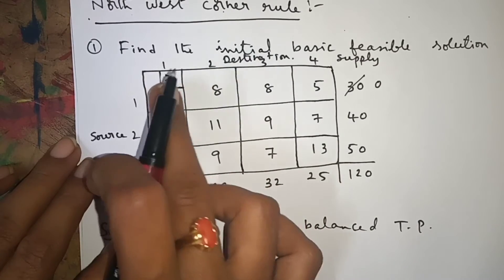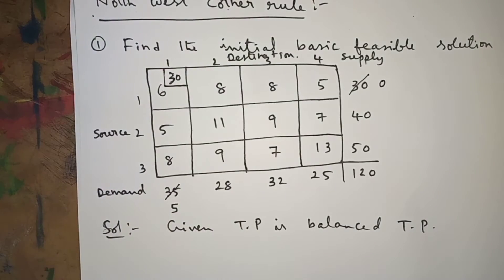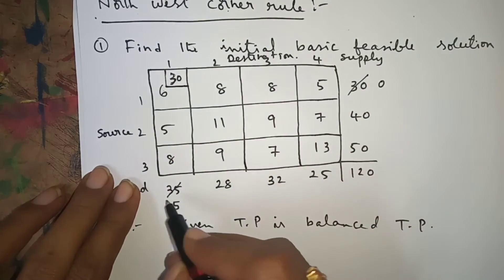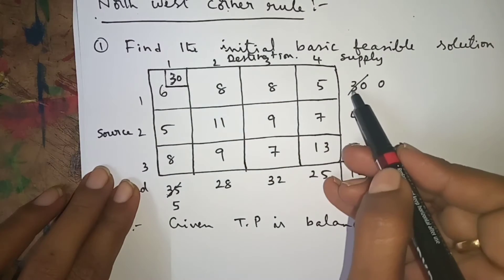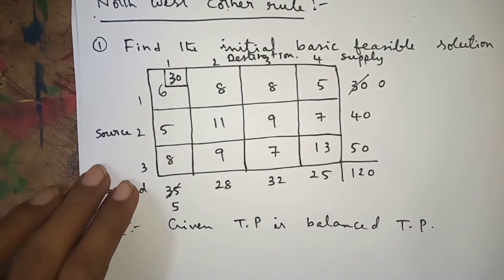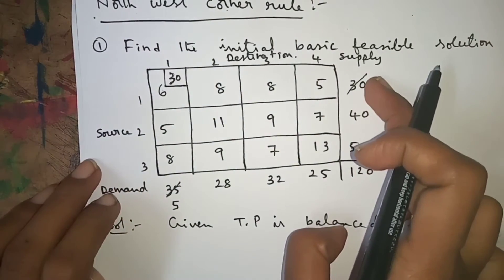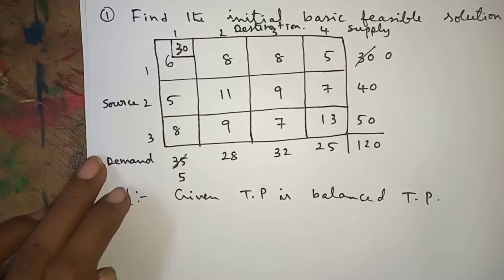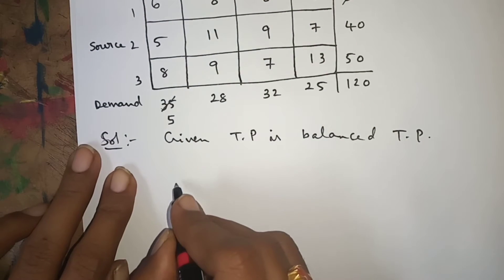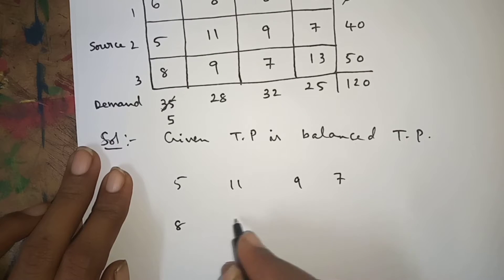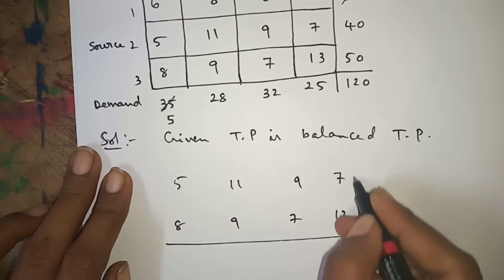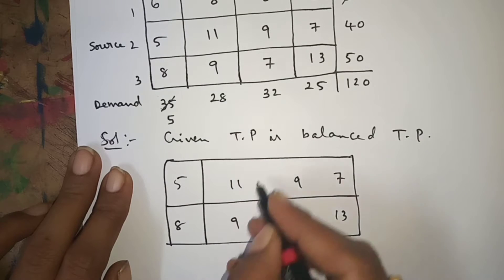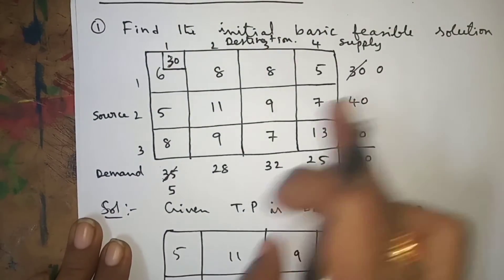We used 30, so cancel it to 0, and the remaining demand is 5. Now wherever you get 0 in any row or column, omit that row or column. Since we got 0 in the first row, I am omitting the first row. The remaining block now has elements: 5, 11, 9, 7, 8, 9, 7, 13.